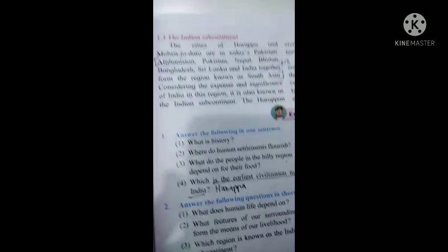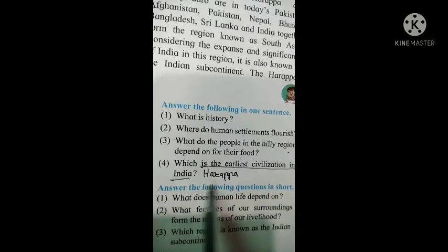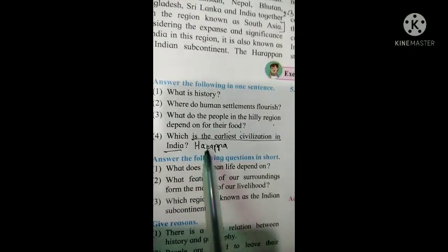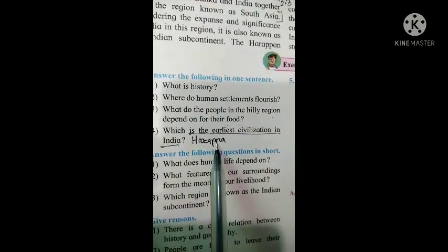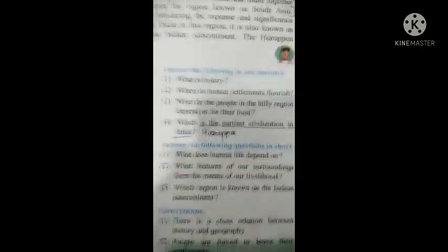Question number 4: Which is the earliest civilization in India? Now here you have to write Harappa. H-A-R-A-P-P-A. Harappa is the earliest civilization in India. You will write the answer like Harappa and the remaining sentence you have to write as it is. Don't write question mark in the answer. So this is the answer.